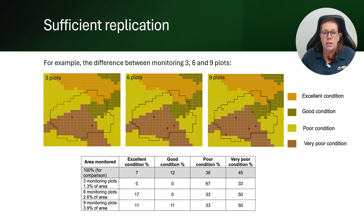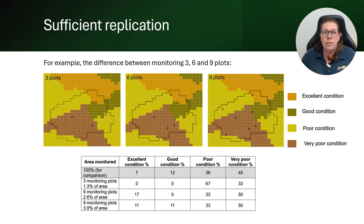Looking at the first diagram, you can see three monitoring plots randomly distributed within the polygon. Based on those three plots we would extrapolate that there are only very poor and poor condition areas at the site, which is obviously not the case. In the second diagram there are an additional three crosses, giving us six monitoring plots. Based on those we'd extrapolate areas in very poor and poor condition with a small area in excellent condition — getting closer to reality but still not accurate. In the third diagram we've added three more monitoring plots, bringing us to nine. Keep in mind those nine plots still only represent 3.9 percent of the total project area. However, with nine plots we now have all four condition types represented.